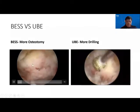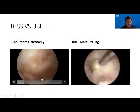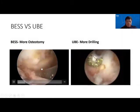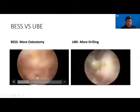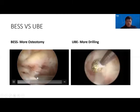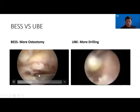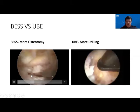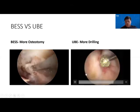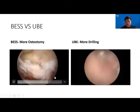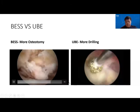In BESS, biportal surgery uses triangulation — you can see the instruments come in at a different angle from the viewing endoscope. You can visualize first before performing with instruments, and you can use a large osteotome to take out the inferior articular process. In UBE, there is more drilling than BESS, where we use more osteotomy.